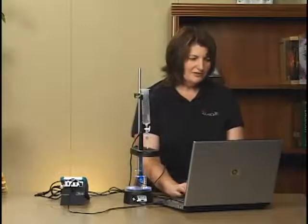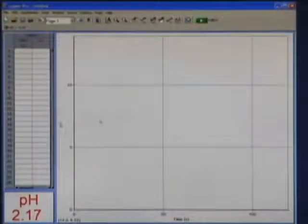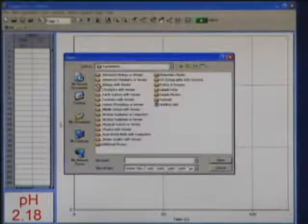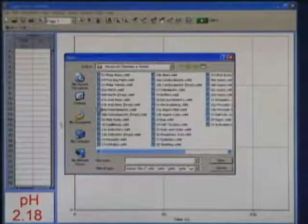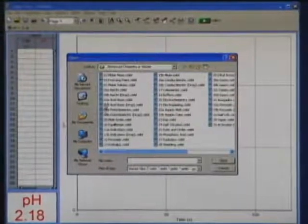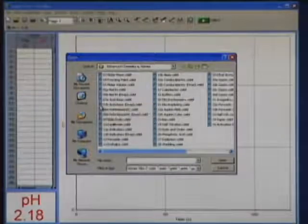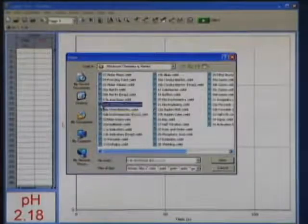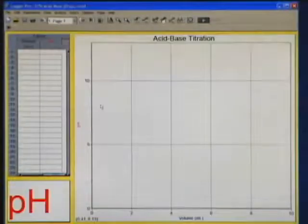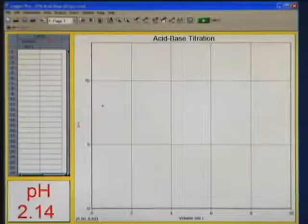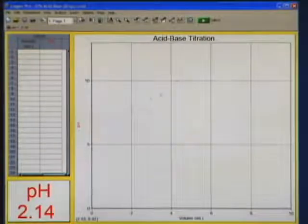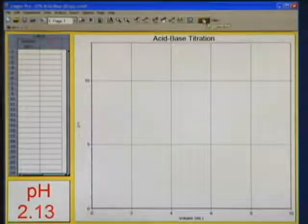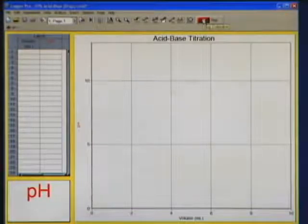So on the computer in Logger Pro, I'm going to open an experiment file from the Advanced Chemistry lab book. In the Advanced Chemistry with Vernier folder, I'll open up lab number seven. There's A and B. A is with a burette and B is with the drop counter, and we're using the drop counter, so I'll open 7B. I'm all ready to go. I just need to click on collect, and now it's waiting for me to start dropping the drops through the drop counter.